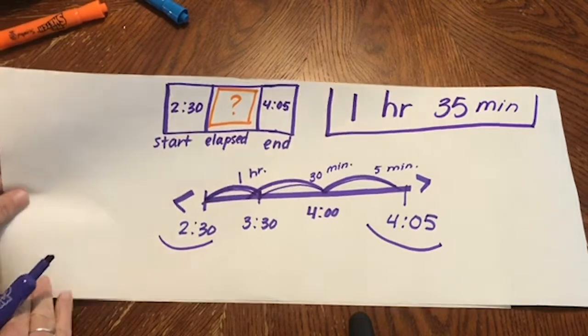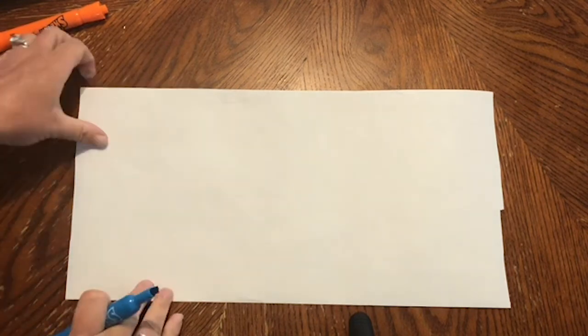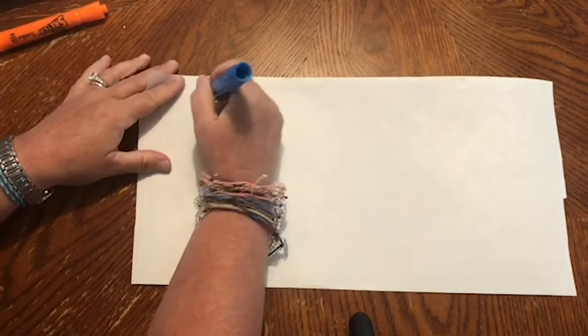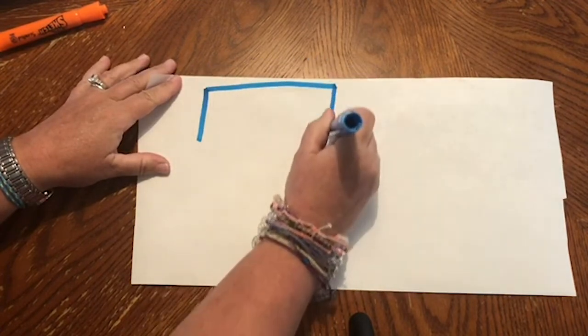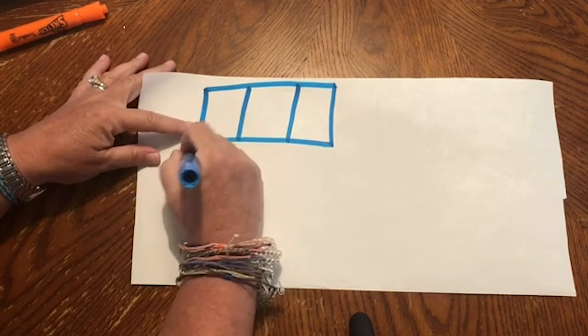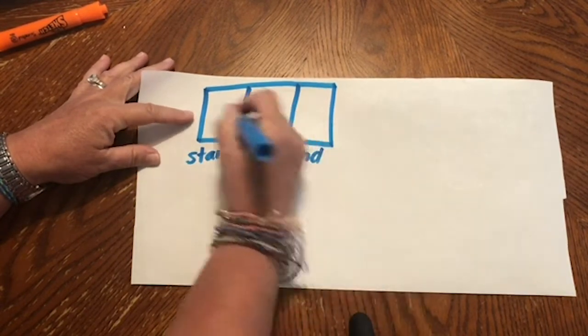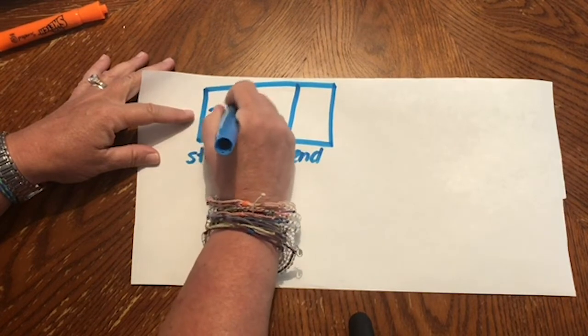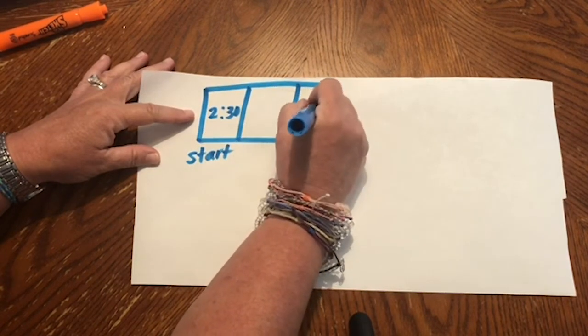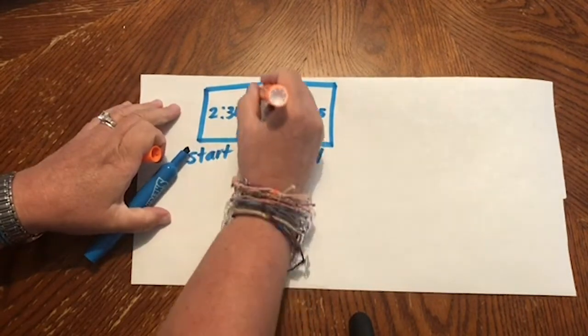Another way you may want to consider is to try a T-chart. It works much in the same way but just looks a little different. If I want to create a T-chart, I would still make a graphic organizer to show the start and end time of the movie. 2.30 and 4.05. We're still trying to figure out what was in between. That was our elapsed time or time that passed by.